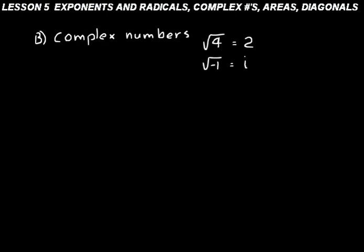We use i to represent the square root of negative one. That means i squared equals negative one. Try to remember those two things: i equals the square root of negative one, and i squared equals minus one. You might want to put those down in your formula book.